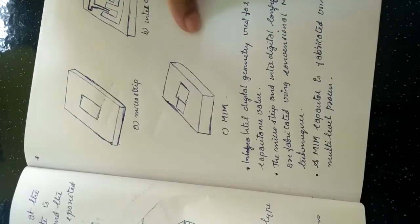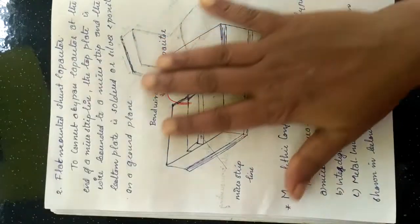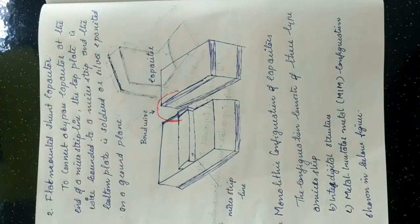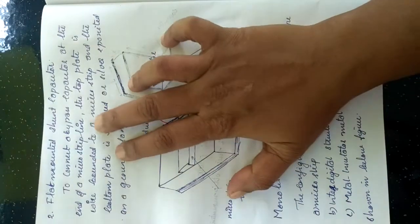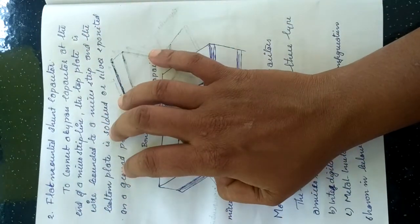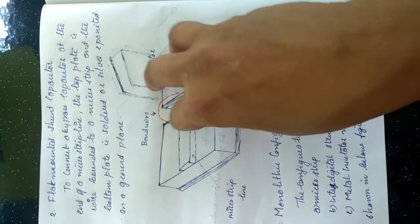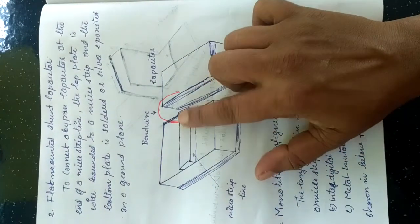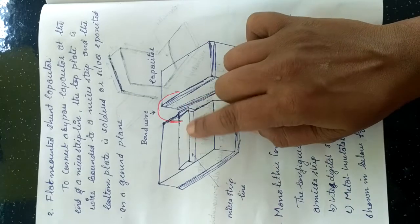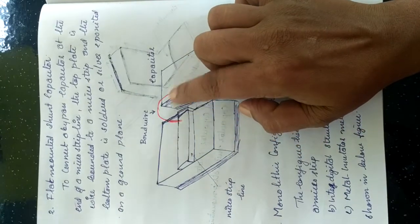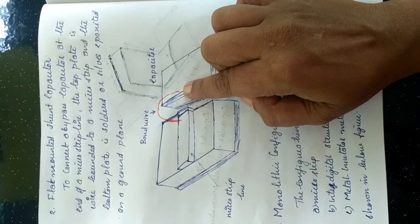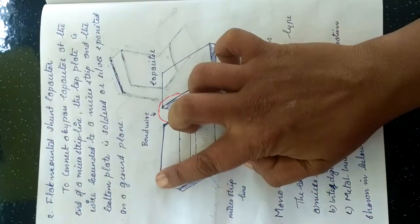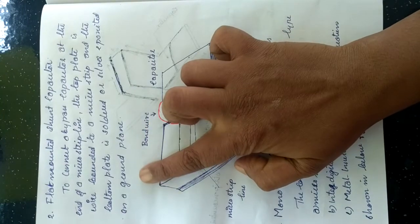The second type of capacitor is the flat mount and shunt capacitor. This flat mount and shunt capacitor has a bypass capacitor connected at the end of a microstrip line. This type of capacitor is mainly used to bypass at the end of the microstrip line.